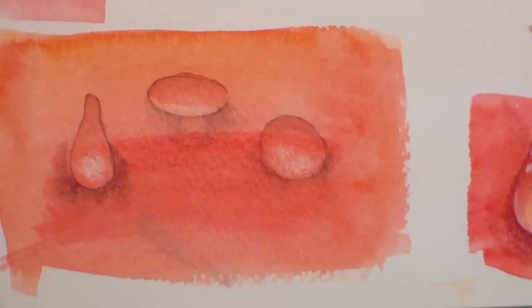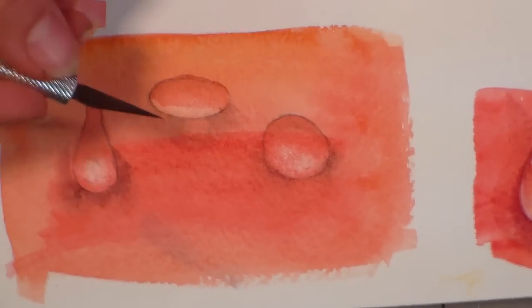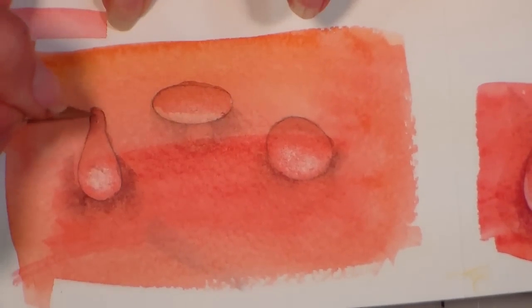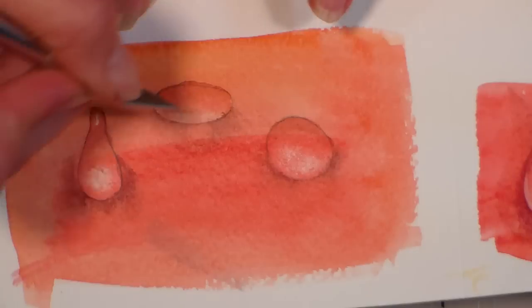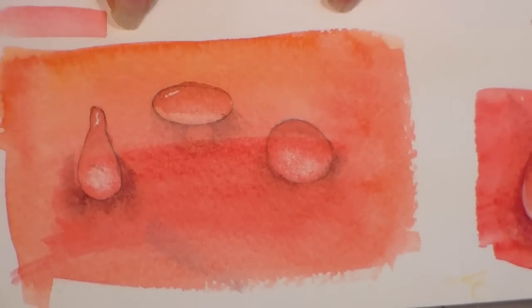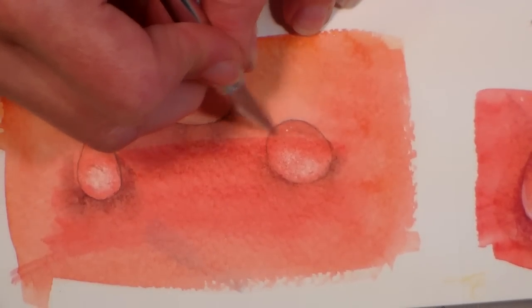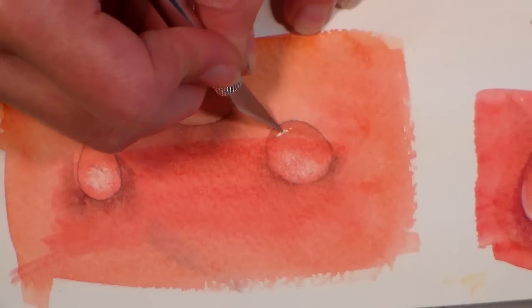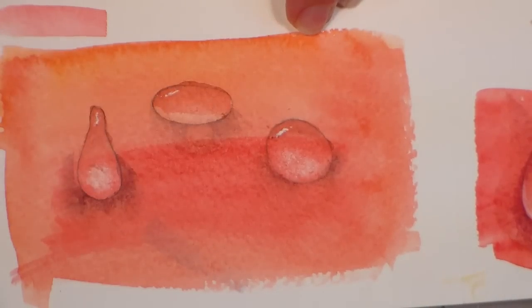To add the highlight on the top, all I do is take an exacto knife and I just scrape it away, so that way we didn't have to keep any of those places white with masking fluid or anything, or by painting around it, we can just go in and carve our highlights out when we're done.